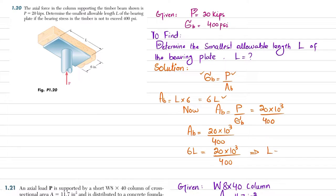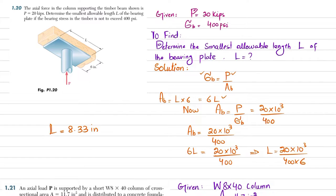Solving for l: l = (20 × 10³) / (400 × 6). When you solve this, the minimum length of the bearing plate is equal to 8.33 inches, which is the answer to problem 1.20.